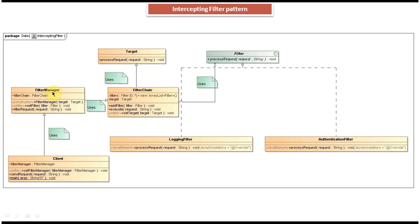The filter manager's basic responsibility is to create the filter chain, add the filters to the filter chain in the proper order, and then initiate the filter processing. The client sends the request to the filter manager. The filter manager creates the filter chain and adds filters using the add filter method, then initiates filter processing by calling the execute method. The filter chain iterates all the filters in the filters collection and executes them one by one. Once it finishes executing all filters, it executes the target.